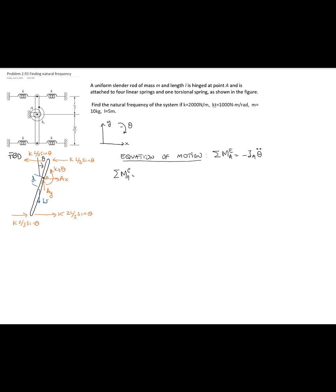For external moments: the torsional spring contributes k_t times theta. The two springs above contribute 2 times (L/3 cos θ)(L/3 sin θ k), and the two springs below contribute 2 times (2L/3 cos θ)(2L/3 sin θ k). The weight contributes its distance times sine theta times the force. This equals the mass moment of inertia times angular acceleration.